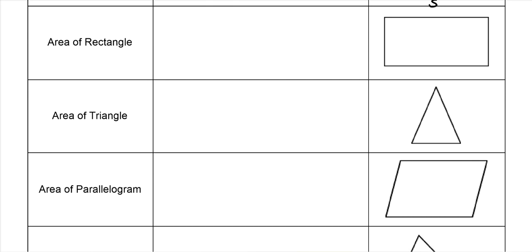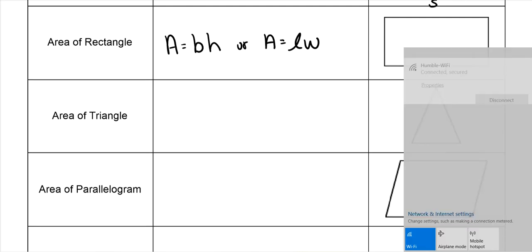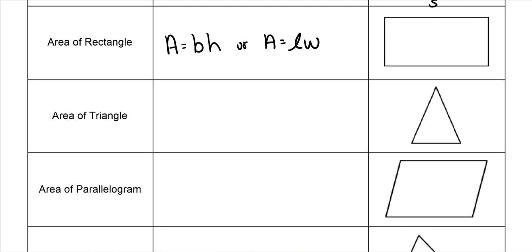Area of a rectangle — there are two ways you can see it. It's either base times height, or length times width, but they're both the exact same thing. This would of course be the height, and this would be the base. So whichever way you want to do it.